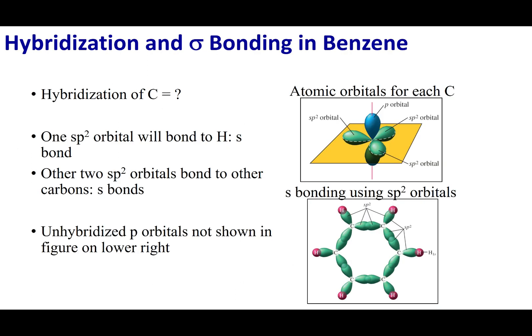So if we take a look at each one of those carbons in the Benzene molecule, what you'll see is it is sp2. If it's sp2, that means I'm sp2 hybridized.